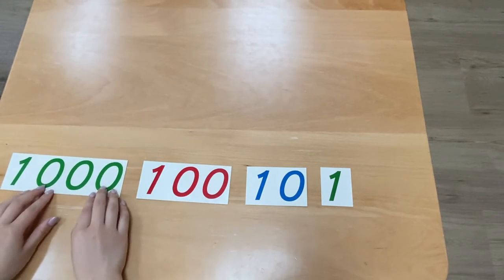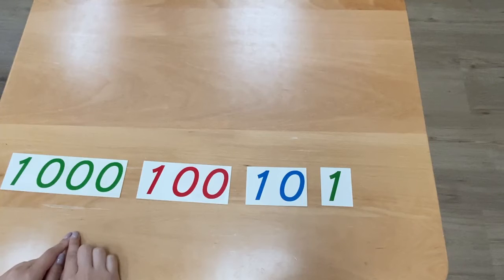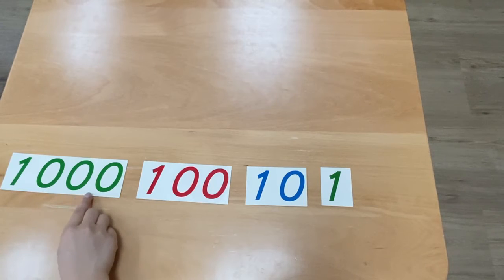This is one thousand. There are three zeros in one thousand.